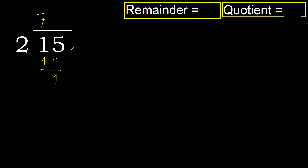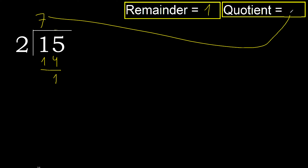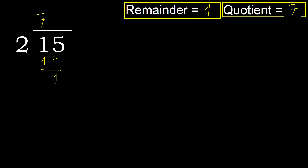Subtract. Next, there is no more number, therefore finish it. The answer is 1 remainder, 7 quotient. Okay.